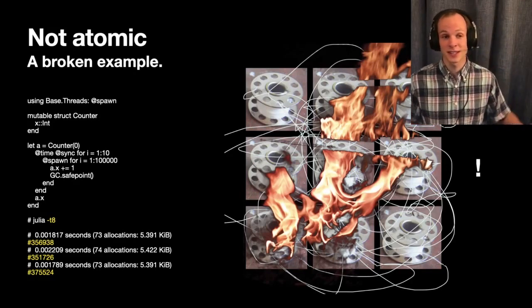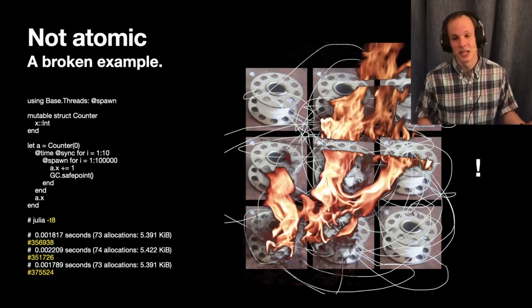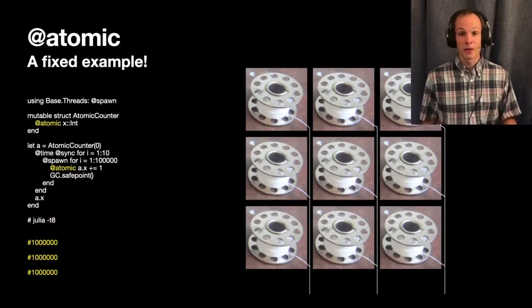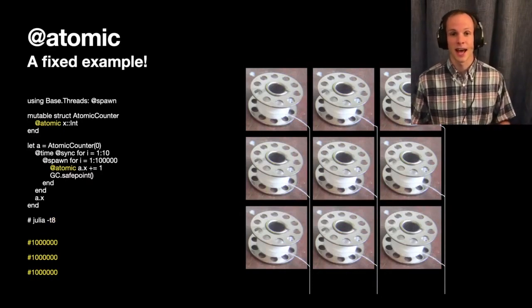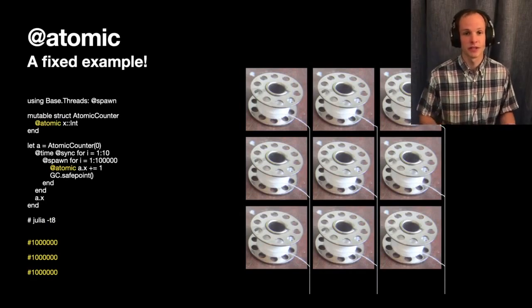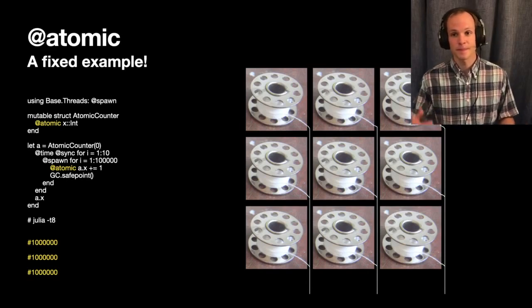And we're missing two-thirds of our updates. So this isn't a case where you could just say well it's kind of good enough. We need to find a better way, and that better way is to mark those usages as @atomic. And now we can see we've recovered the original behavior of the code. We count up to one million and all of our threads, still using -t8, are behaving correctly.